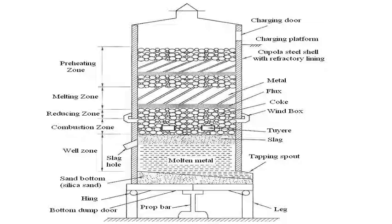Below the charging door is the charging platform where materials are stored and loaded in sequence: first coke, then flux/plugs material, then metal — this is one layer — then again coke, plugs, and cast iron. The main important parts of the cupola are: charging door, charging platform, steel shell lined with refractory bricks, metal, flux, coke, wind box, tuyeres, slag, liquid metal, legs, hinges, and silica sand base.